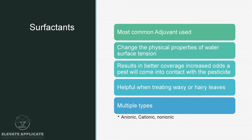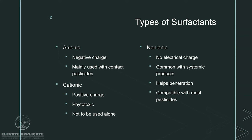Surfactants are the most common adjuvant used. They change the physical properties of water surface tension, resulting in better coverage, increased odds of pests coming into contact with the pesticide, and are helpful when treating waxy or hairy leaves — mainly when applying herbicides to penetrate wax or get past surface hair. There are multiple types: anionic (negative charge, mainly used with contact pesticides), cationic (positively charged, phytotoxic and should not be used alone), and non-ionic (no electrical charge, common with systemic products, helps penetration and compatible with most pesticides). The majority of surfactants used in practice are non-ionic.